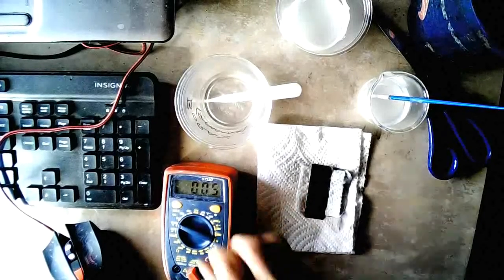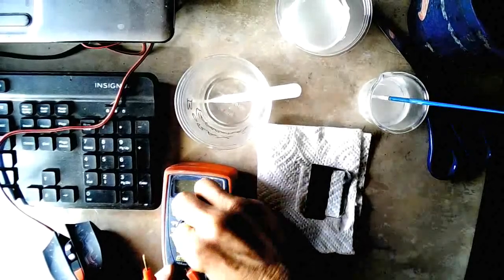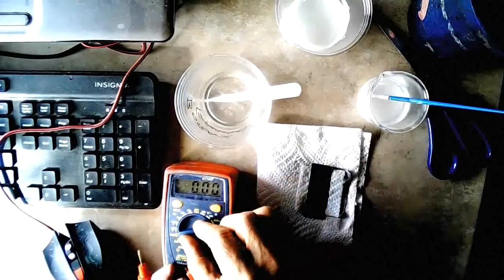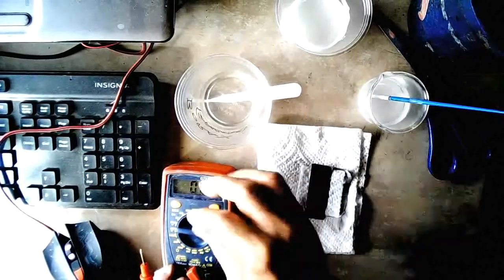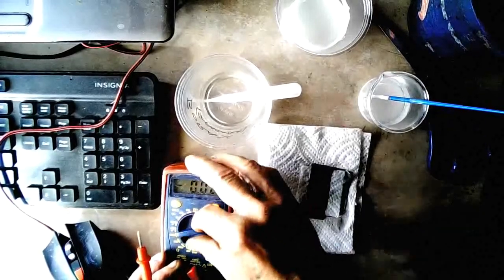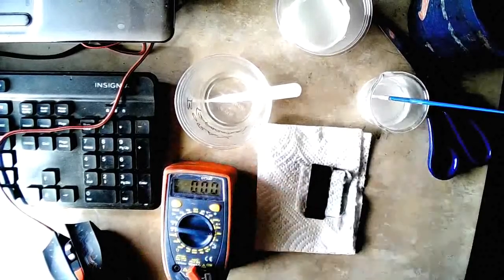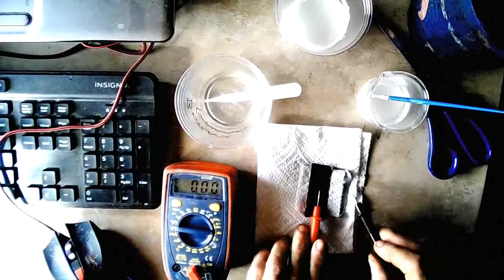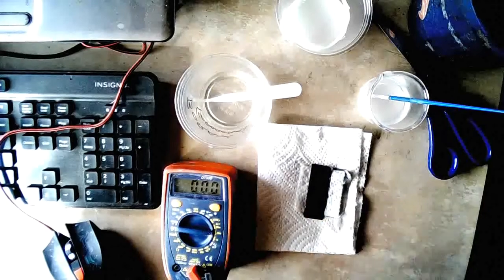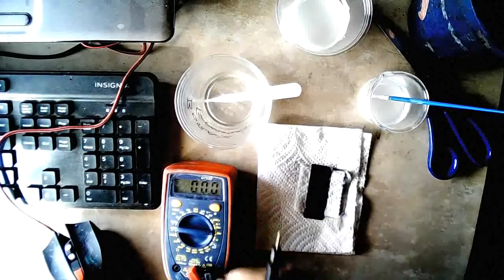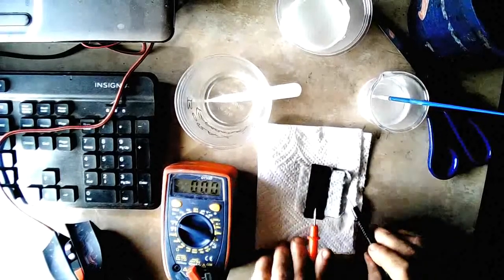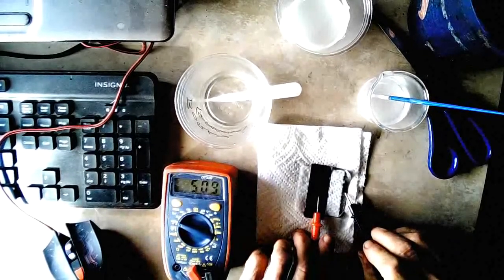And then, see the last time we did this same thing, we got one point seven, or one point three something millivolts out of that. Let's see what we get this time, and that's five point three, I think I saw, or five point one. So adding lime makes a huge difference.